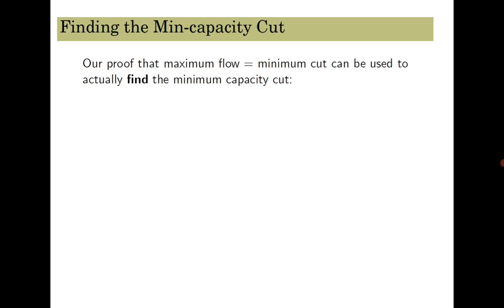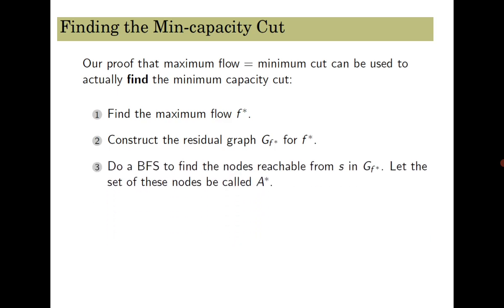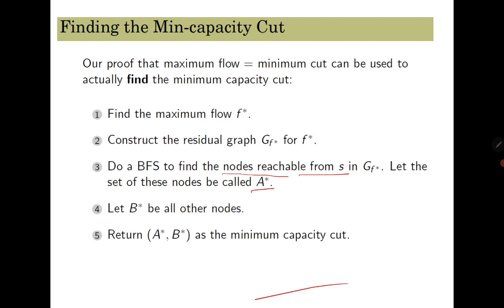To find the minimum capacity cut, find the maximum flow using the Ford-Fulkerson algorithm and construct the final residual graph. In the residual graph, find the set of vertices reachable from s — call them A*. The remaining vertices form B*. Then A*, B* is the minimum cut.